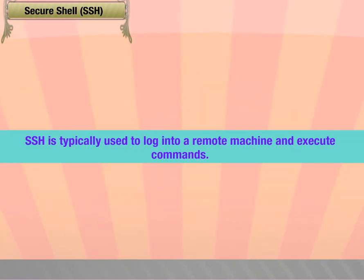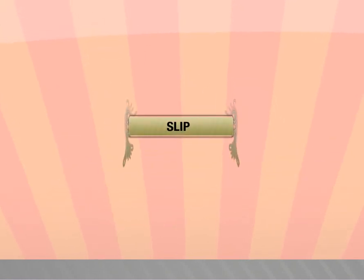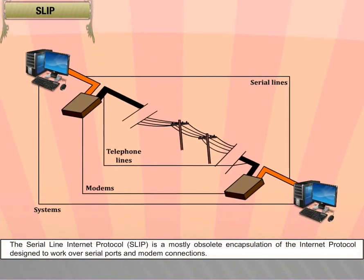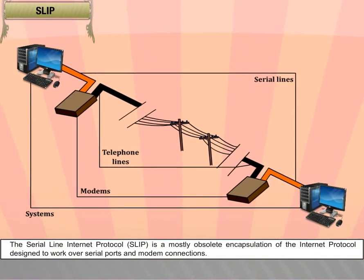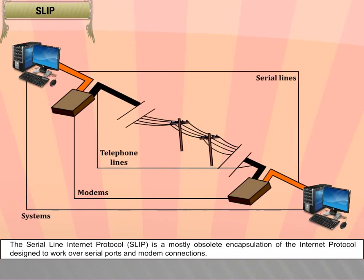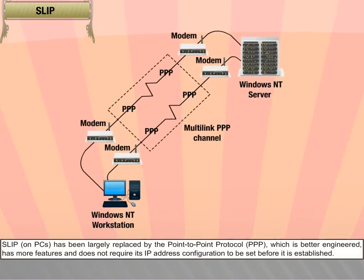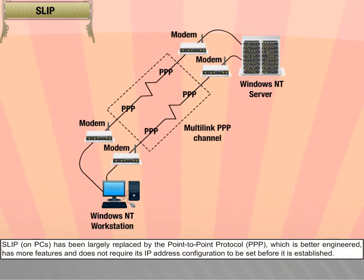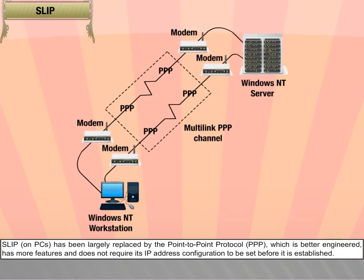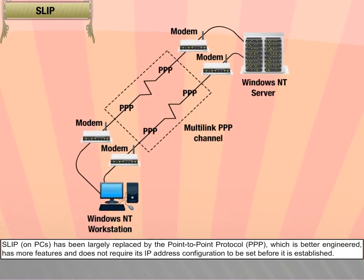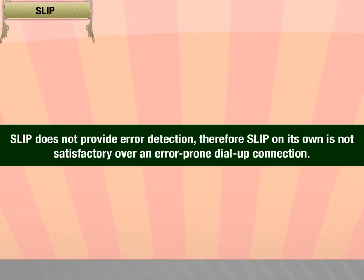SSH is typically used to log into a remote machine and execute commands. SLIP (Serial Line Internet Protocol) is a mostly obsolete encapsulation of the internet protocol designed to work over serial ports and modem connections. SLIP on PCs has been largely replaced by PPP (Point-to-Point Protocol), which is better engineered, has more features, and does not require its IP address configuration to be set before it is established. SLIP does not provide error detection, so it is not satisfactory over an error-prone dial-up connection.